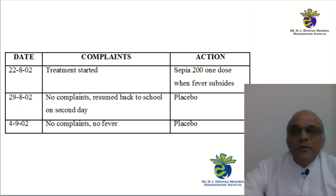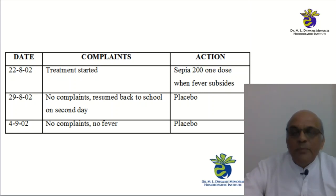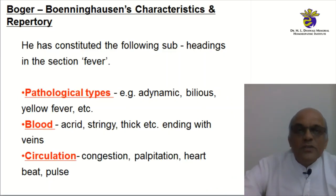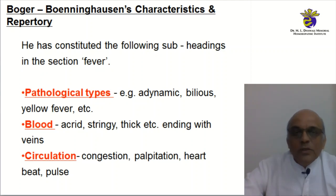This demonstrates the repertory use of BBCR and its application in fever. In BBCR, there are multiple subheadings when you open the chapter on fever. There is a pathological type with certain nomenclature used by Boger. You will read words like typhodynamic, bilious, yellow fever. Most of us should be aware that this nomenclature and today's current nomenclature for clinical conditions may not be identical. Most of these nomenclatures were experiential, applied based on local and colloquial experience of the practitioners when they were practicing.